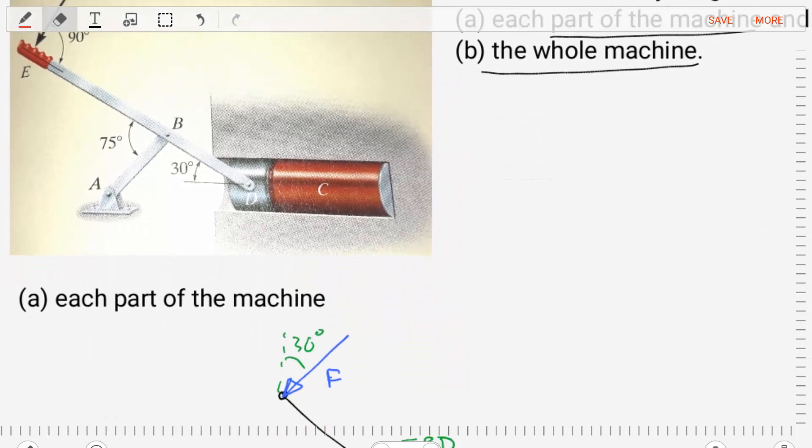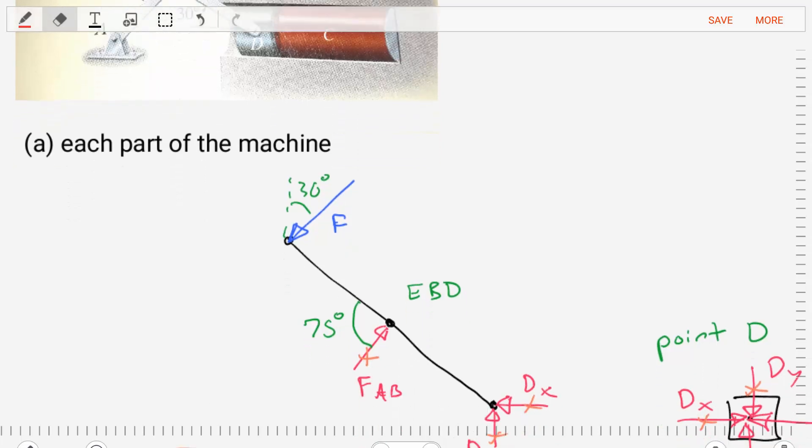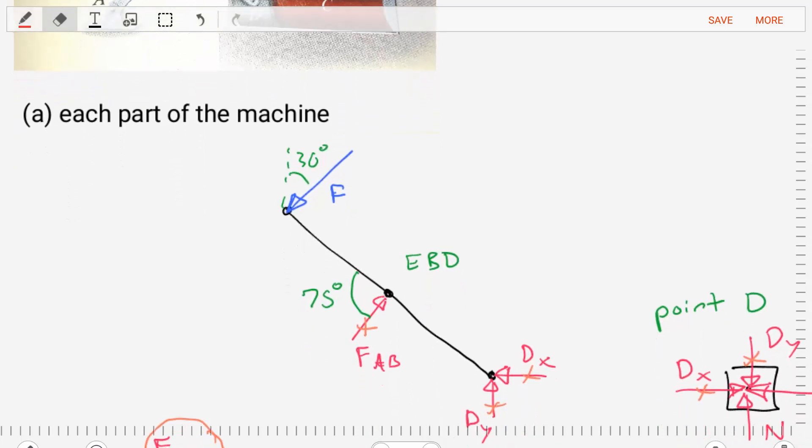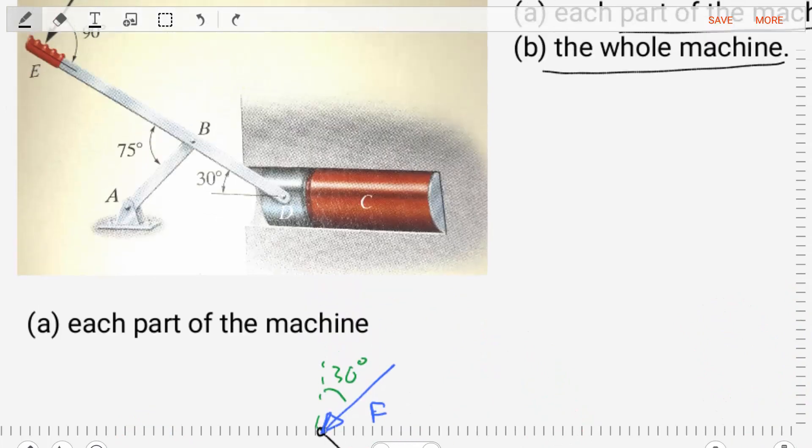Let's start with a free body diagram for the main element in the structure. This is member EBD. Member EBD has an external loading of force F. We'll assume that is a known. And it is connected at two locations. It's connected at point B to the short link and it's connected with a pin connection at D to the can crusher.